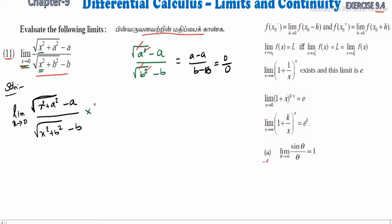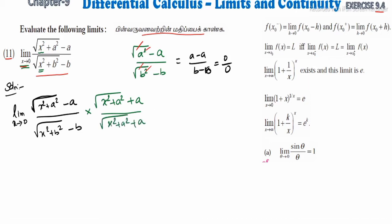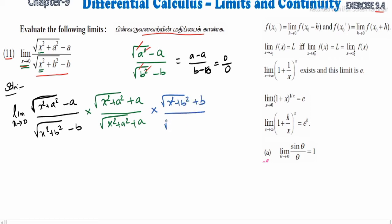So, we have a numerator and denominator to rationalize. Multiply numerator and denominator by: square root of x squared plus a squared plus a, over square root of x squared plus a squared plus a, and also by square root of x squared plus b squared plus b, divided by square root of x squared plus b squared plus b.